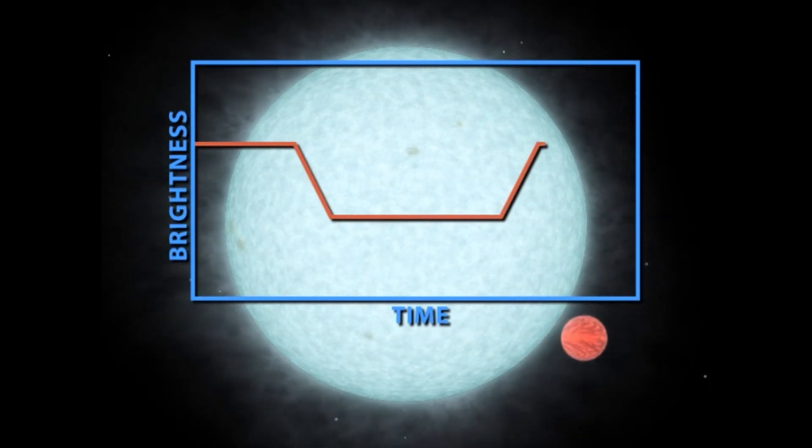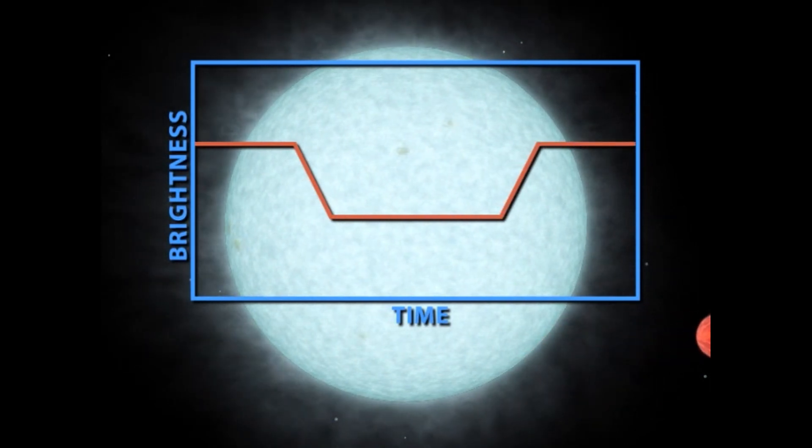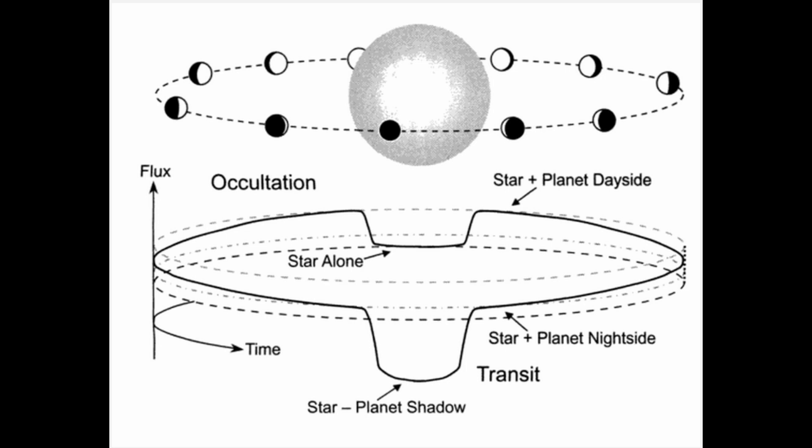To visualize a secondary eclipse is tricky. When the planet passes in front of the star and blocks some of its light, we have a transit, or primary eclipse. That part isn't so hard to visualize, and this measurement is much easier to make.